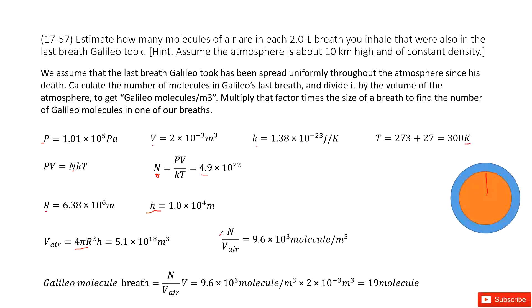Now we can find, we use the number of molecules in Galileo's last breath divided by the total volume for the air. Then we find for 1 meter cube, we have 9.6 times 10³ molecules. This is the Galileo molecules per meter cube.